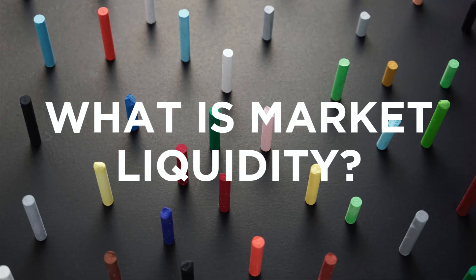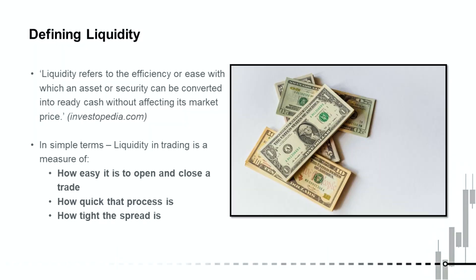Let's begin by covering what we mean by liquidity in trading. One of the official definitions from Investopedia is: the efficiency or ease with which an asset or security can be converted into ready cash without affecting its market price. Now, if you're like me and you've read that for the first time, it doesn't mean anything. That is a little overcomplicated. When we're talking about liquidity, what we're really talking about is how easy is it to make a transaction.